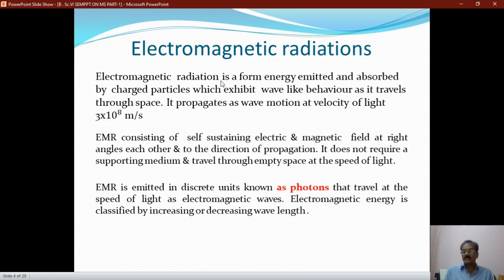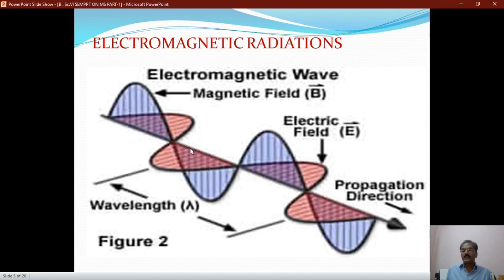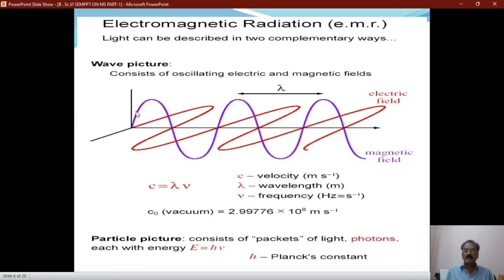The electromagnetic energy is classified by increasing or decreasing order of wavelength. Electromagnetic radiations behave like a wave in nature. When electrically charged particles undergo oscillatory motion, an electric field is produced. At the same time, the magnetic field is also produced at right angles to this electric field. The wave is moving along the x-axis, and these two fields are at right angles to each other and also at right angles to the direction of propagation.